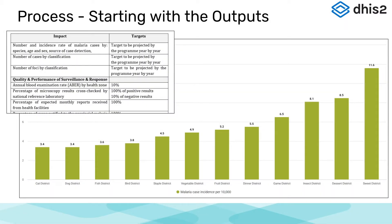When considering how DHIS-2 can fit in with the workflow process, it is useful to start with the outputs that are required. In the case of a malaria program, these include number and incidence rate of cases and various quality and performance metrics. Understanding these dimensions helps define the minimum data collection requirements needed to produce program outputs, and can lead to a discussion on how this may be presented in DHIS-2, for example, through charts or visualizations.